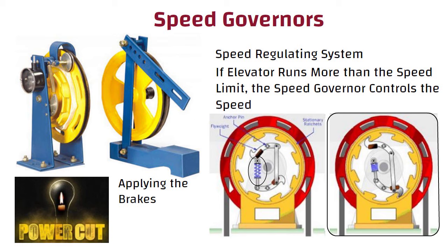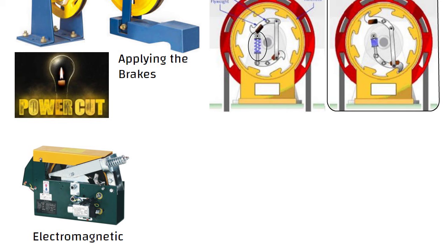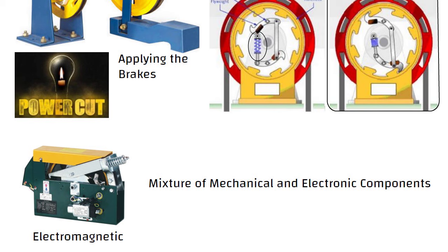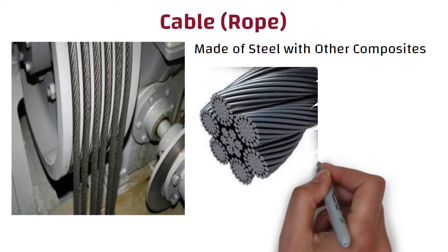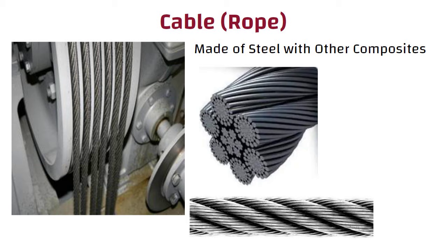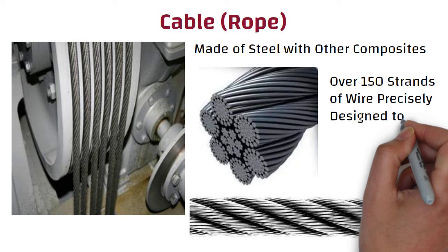Some governors are entirely mechanical, others are electromagnetic, and still others use a mixture of mechanical and electronic components. The governor is usually attached to the bottom of the car and is also known as the governor rope. Elevator cables are not single wires but several strands of various sizes wrapped together. A typical cable or rope can have over 150 strands of wire, precisely designed to be strong, flexible, and give long life.